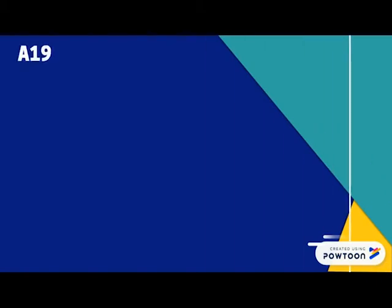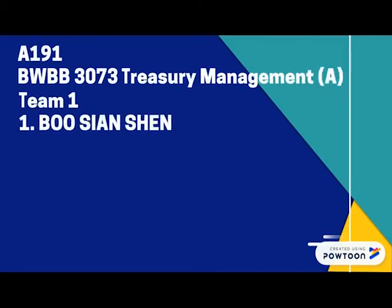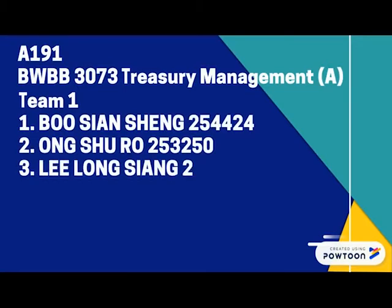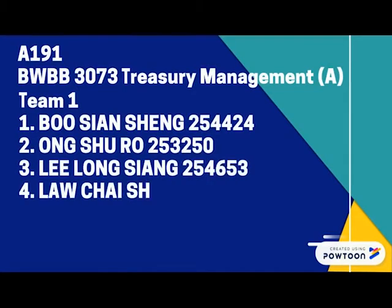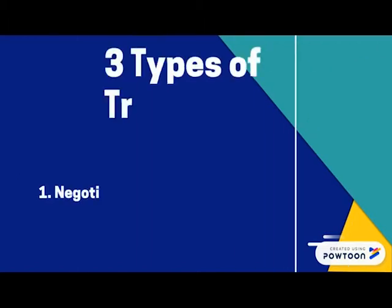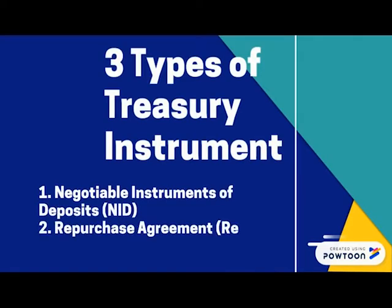Hello everyone. We are from team 1. Our team consists of Busan Chung 254424, Ong Shuro 253250, Lielong Xiang 254653, and La Chaishan 253254. Today, we will be presenting three types of treasury instruments, which are negotiable instruments of deposits (NID), repurchase agreement (repo), and Bank Negara Malaysia bonds.